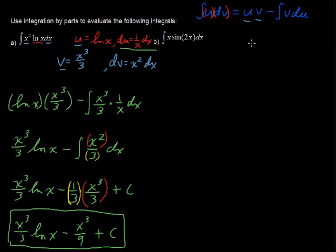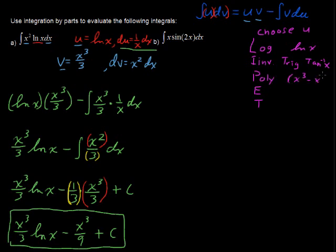Well, I'll tell you why. There's a nice little way to memorize how to choose u. Choose u based on this pattern: LIPIT. LIPIT is the way to remember it. That's logarithmic functions like natural log of x. Inverse trig functions like inverse tangent of x. Polynomial like x to the third minus x squared.